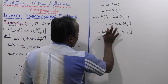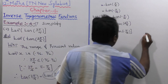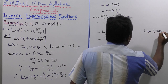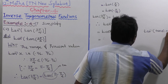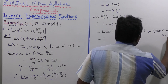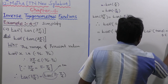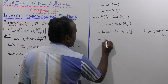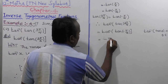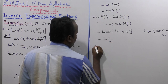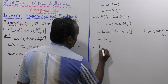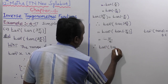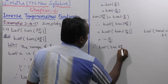Now applying the form: tan inverse of tan(θ) equals θ, where θ belongs to the interval minus π/2 to plus π/2. Since minus π/4 belongs to this interval, tan inverse of tan(3π/4) equals minus π/4.